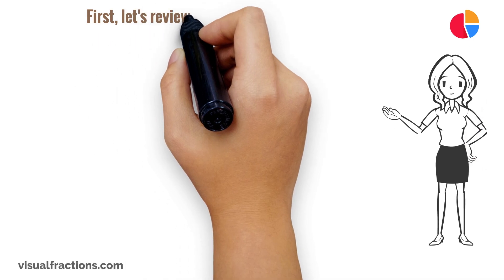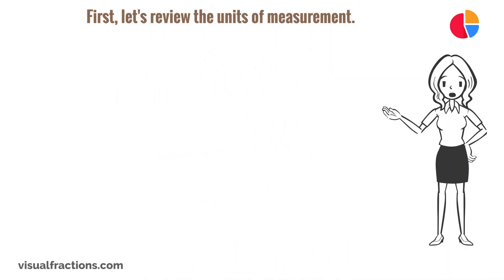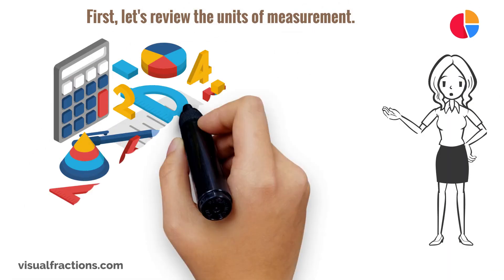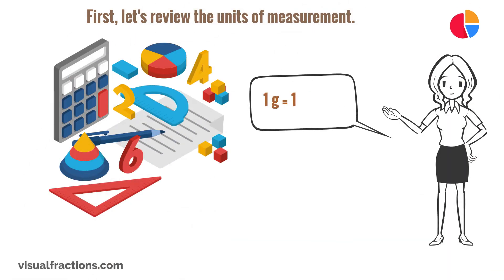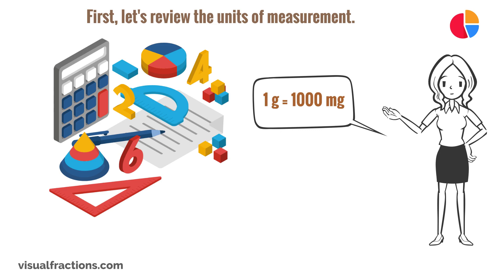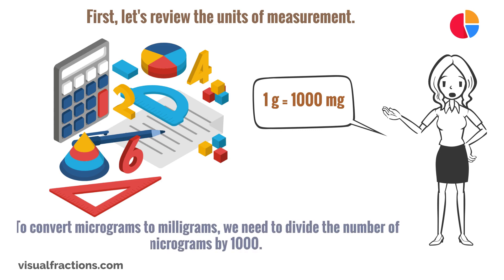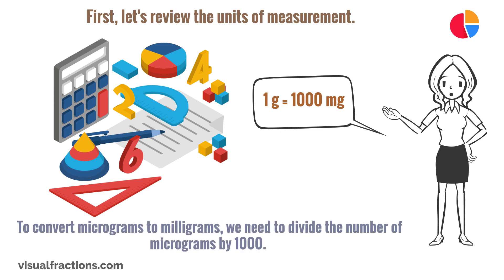First, let's review the units of measurement. A microgram is one millionth of a gram, while a milligram is one thousandth of a gram. To convert micrograms to milligrams, we need to divide the number of micrograms by one thousand.